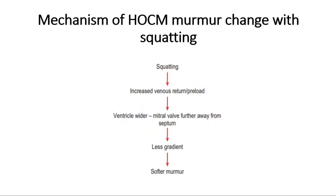This picture shows how squatting affects the HOCM murmur. When a person squats, there is increased venous return or preload, causing a wider ventricle, and the mitral valve leaflet is again further away from the septum — less gradient, and a softer murmur is heard.